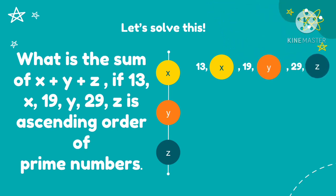So to find the value of x, y, and z, what numbers are the next prime numbers after 13? So x is equal to 17. So what prime number comes after 19? Which is 23. And what prime number comes after 29? And that is 31. So we have now the value of x, y, and z.